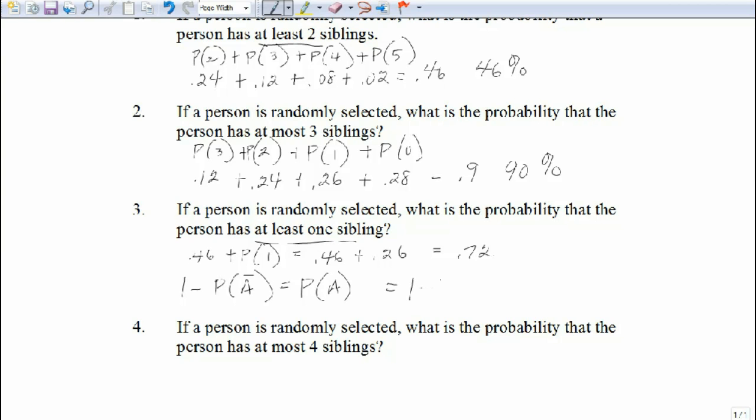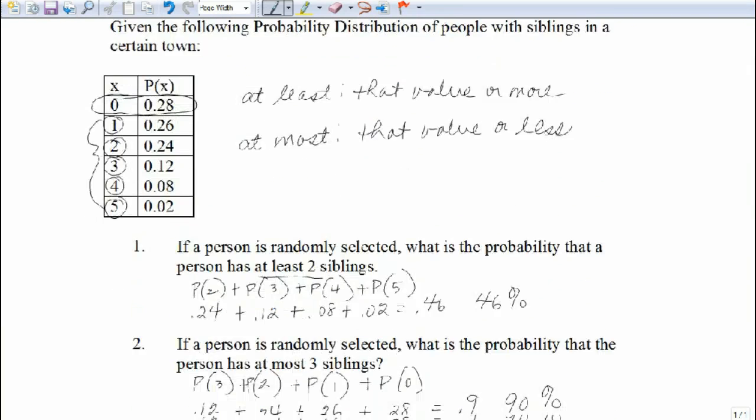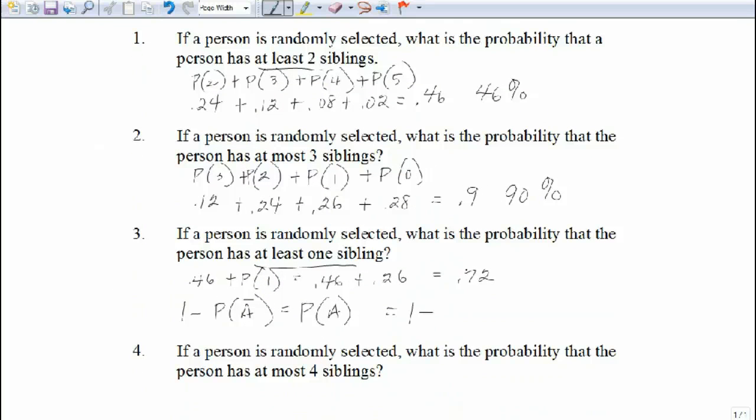One minus, well, the probability of what we don't want is we don't want zero. So that's 0.28. So if we take one minus 0.28, we get 0.72, which is exactly what it would have been had we added them all together to get the probability in the original sense.